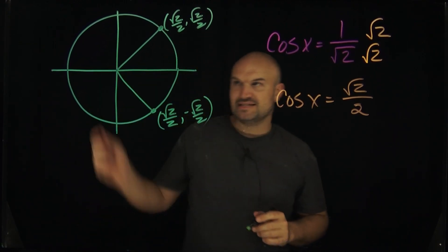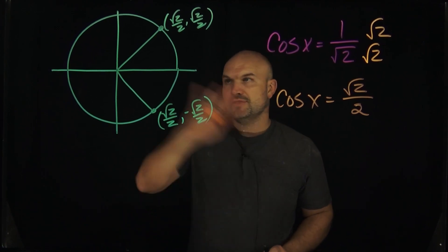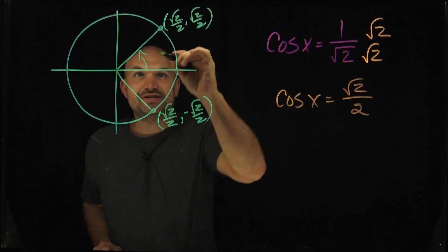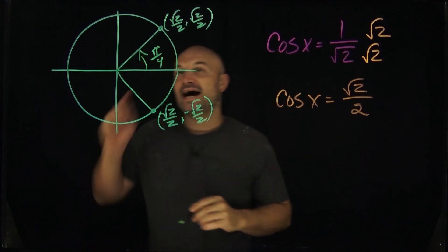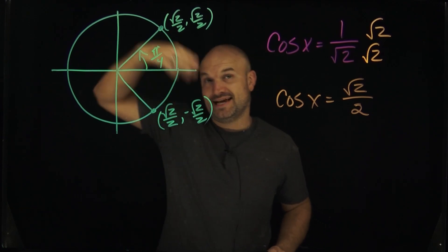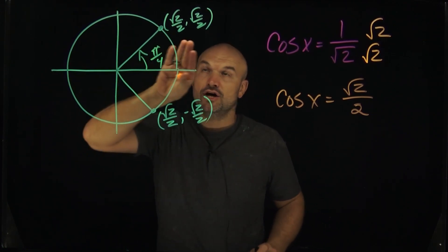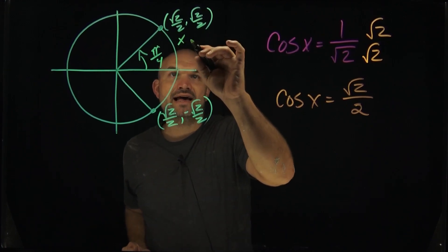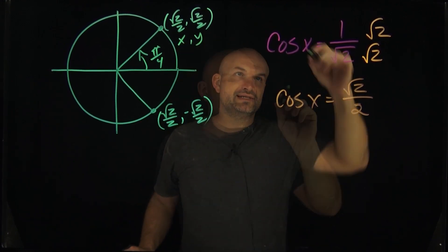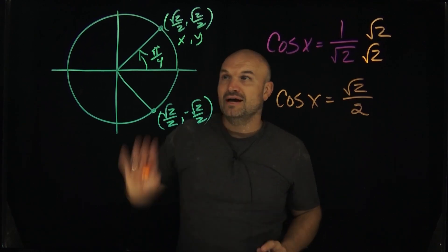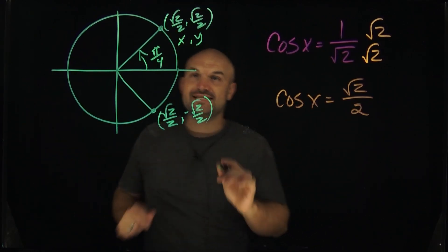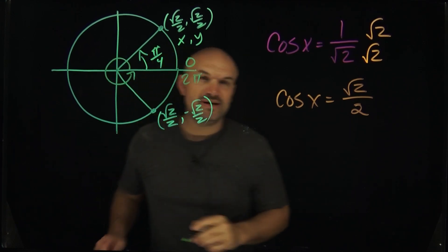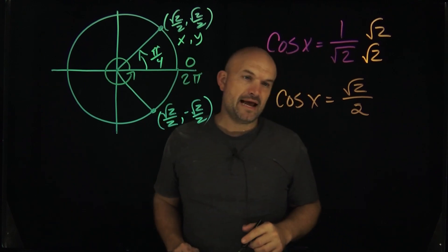There are a couple things I did quickly in my head. The first thing is I always remember the first quadrant of the unit circle. You need to know that this angle is pi over 4, and at that point on the unit circle for the angle pi over 4 (or 45 degrees), you're going to have the coordinate point (√2/2, √2/2). That is your x and y coordinate. So remember, this is: cosine of what angle equals √2/2? On the unit circle — which covers the restriction of 0 to 2pi — one of the angles is going to be pi over 4.